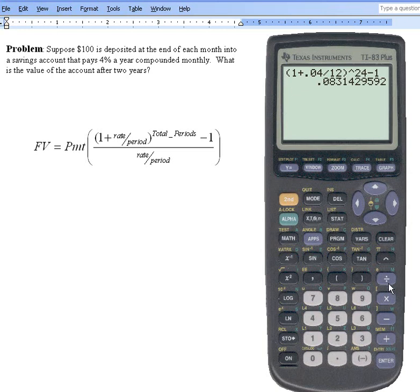we want to divide this numerator by the rate per period. So I can just say divide by the previous answer. And I want to put parentheses around this because this is a fraction denominator. So it would be 0.04 divided by 12.